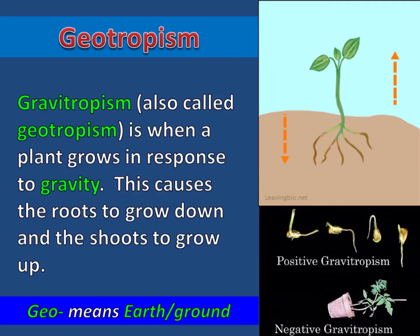Gravitropism, also called geotropism, is when a plant grows in response to gravity. This causes the roots to grow down and the shoots to grow up.